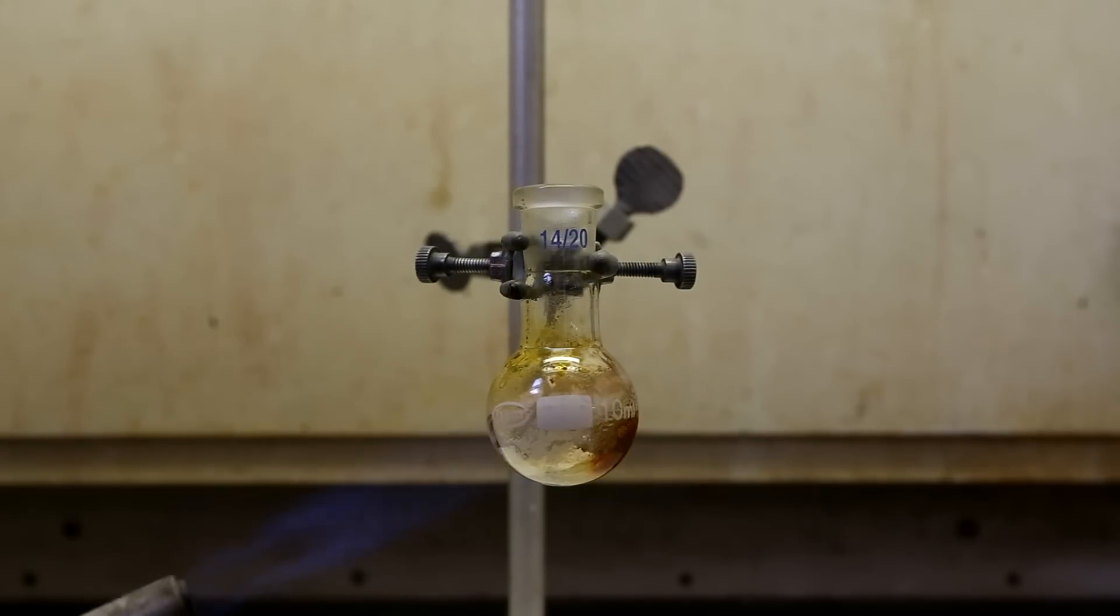I then rotated the round bottom flask so that it could heat the other side. Unfortunately, when using this method, a lot of the powder will remain unreacted. After a while, when it looked like the amount of brown liquid forming had slowed down and almost stopped, I removed the flask from heat.